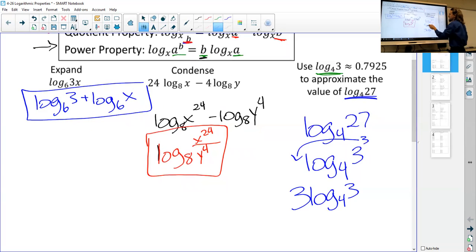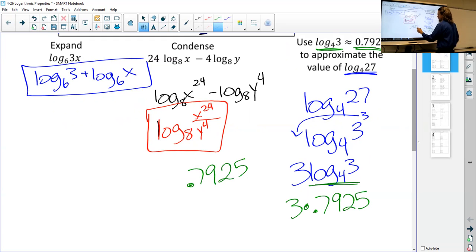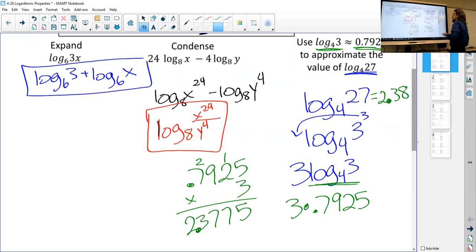So then this becomes math we can actually solve. So we can say, this is three times 0.7925. And then we just have to work that out in case we don't have our calculator handy. Because the whole point of this is like, what if you're at the SAT and they don't give you a calculator for this question, can we solve it? And the answer is, of course we can. That's seven, 27, 23, four decimal places. So we can say log base four of 27 is about 2.38, not equals approximately. And there you go.